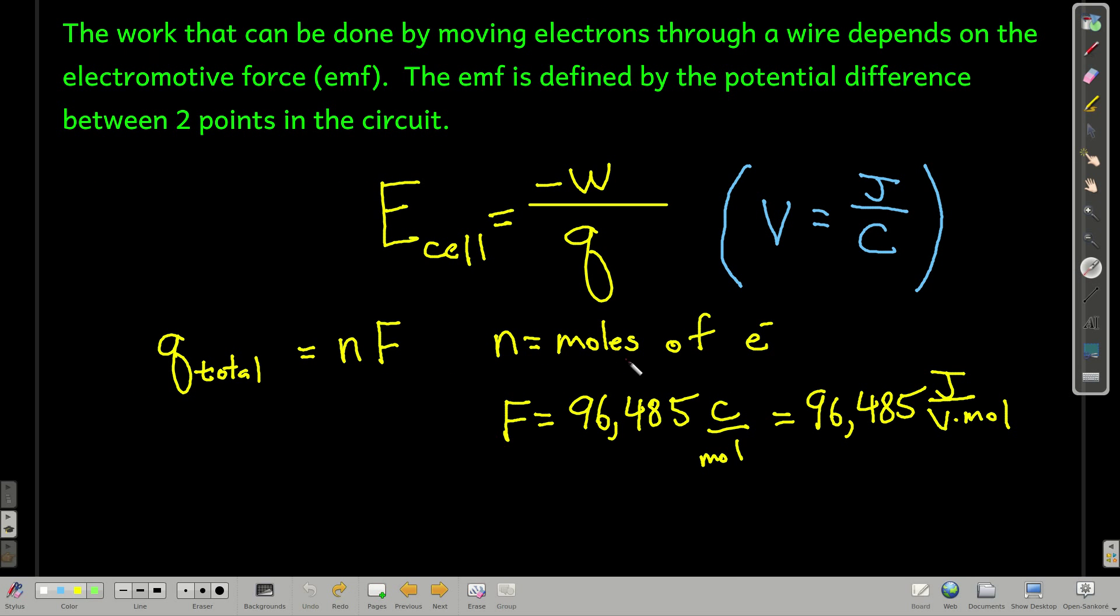Now we're going to talk about work, work that we can do by moving electrons through a wire. And how much work we can do depends upon the electromotive force. And what that is, it's the potential difference between any two points in the circuit. And that's going to be in volts, and that describes E of the cell, the potential of the cell. So the potential of the cell is equal to the work over the charge transferred.